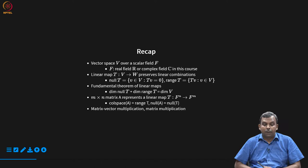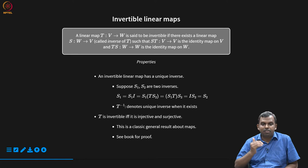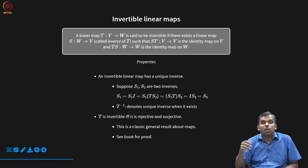This is a quick recap. The matrix-vector product is simply evaluation of the linear map itself in the matrix domain, and matrix multiplication corresponds to composition of linear maps — when you interpret that as a matrix, that is what you get. So let us proceed by looking at invertibility, isomorphism, operators and all that in this lecture.